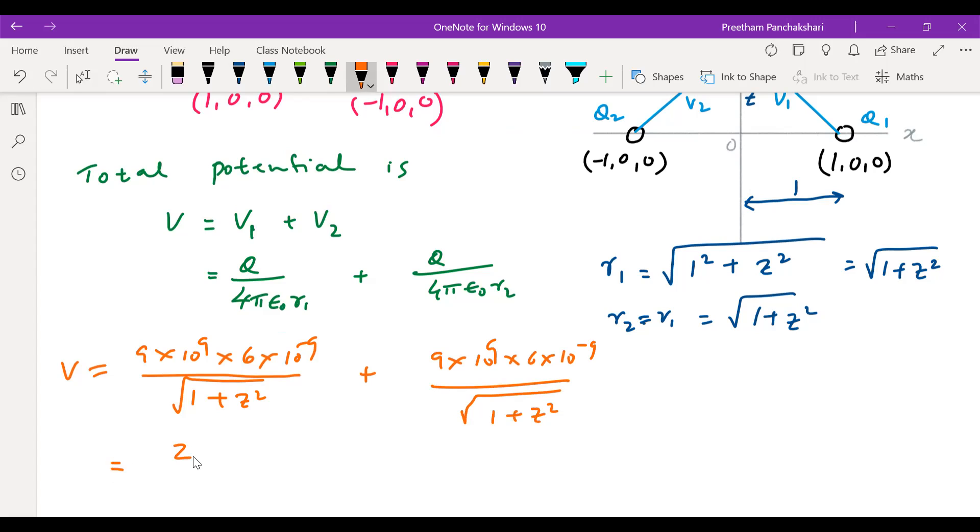So the terms are repeated. So we have here 2 times 9 times 6 divided by root of 1 plus z square. So this is going to be 108 divided by root of 1 plus z square.